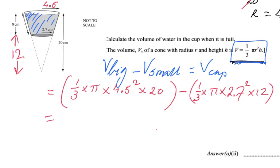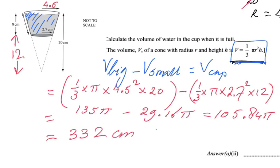That should give me already the majority of the points. If you put it in your calculator, I'm going to leave that in terms of π. That is going to give me 135π take away 29.16π. So 135π take away 29.16π, I leave it in terms of π so I don't have to write down all those decimals yet. That's 105.84 times π, and then in the end I times it by π and round it correctly to three significant figures: 332 centimeters cubed.